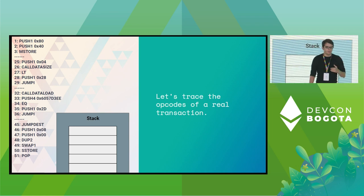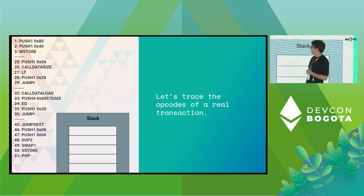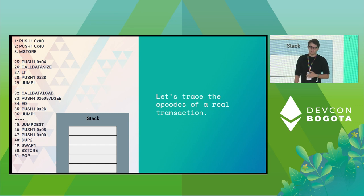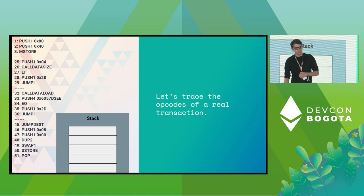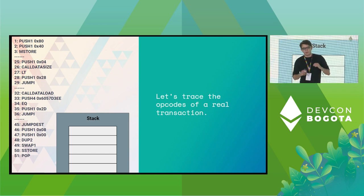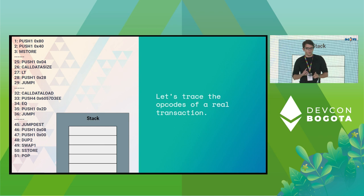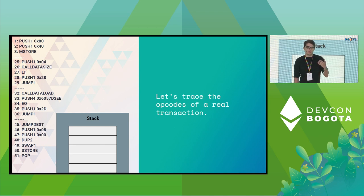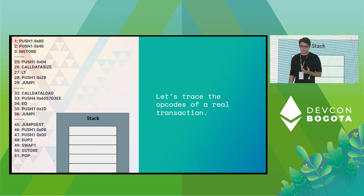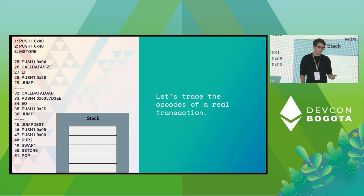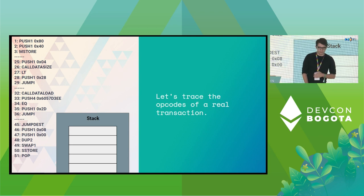I've divided the opcodes into four sections — three parts common to every transaction and one part specific to our contract. What I'm going to show you is not a one-to-one representation of what you'd see from debug_traceTransaction. For example, we're converting hexadecimal numbers to decimals since hex is hard for humans to read, and we're showing booleans as true or false — just to make things easier to follow.